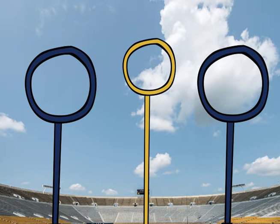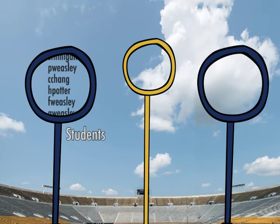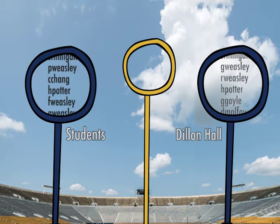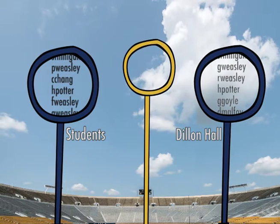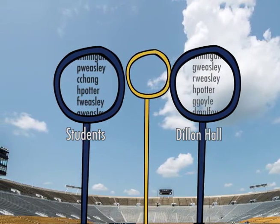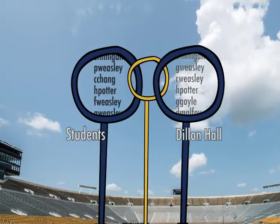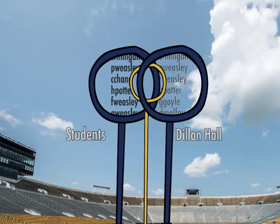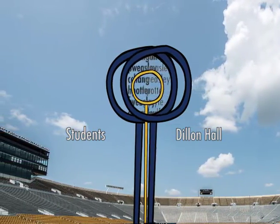While the ID card system could certainly query various databases to see if Harry has a valid account and is a resident of the building, it is simpler to check if he is a member of a group. When Harry was assigned to his hall, his account was added to an identity group of residents for that building. The card system simply checks if Harry is in that group. Groups make it easier to manage permissions without manually controlling all the access lists or querying multiple data sources.